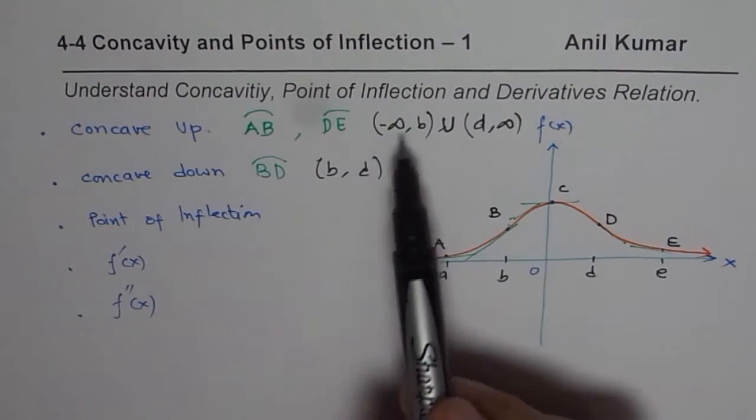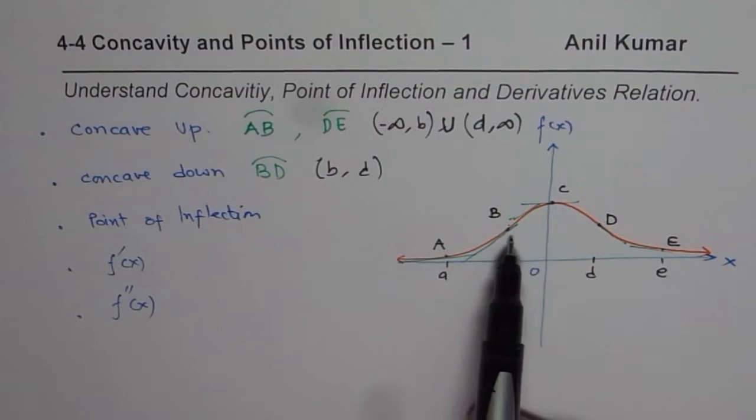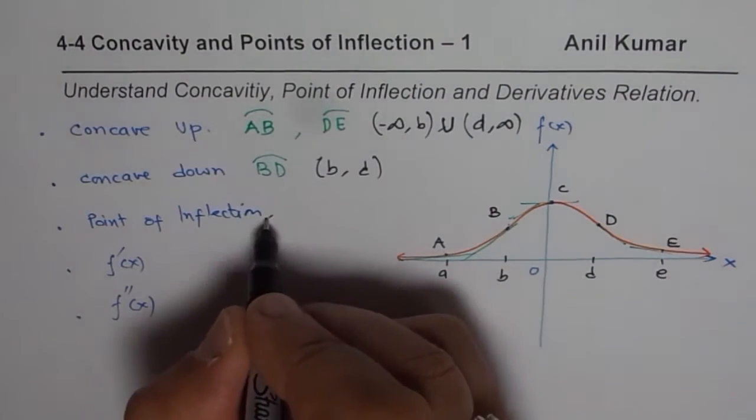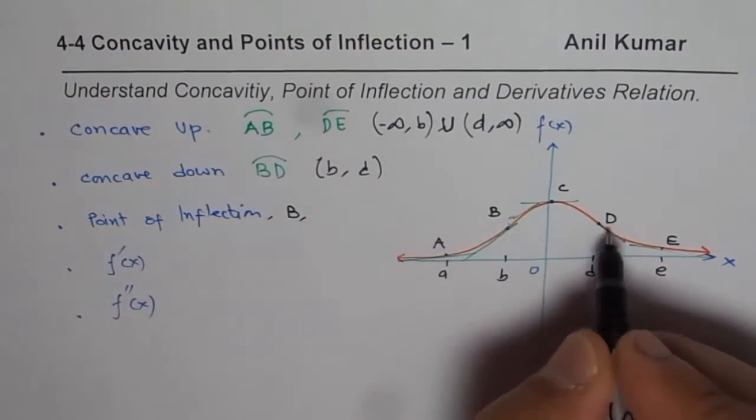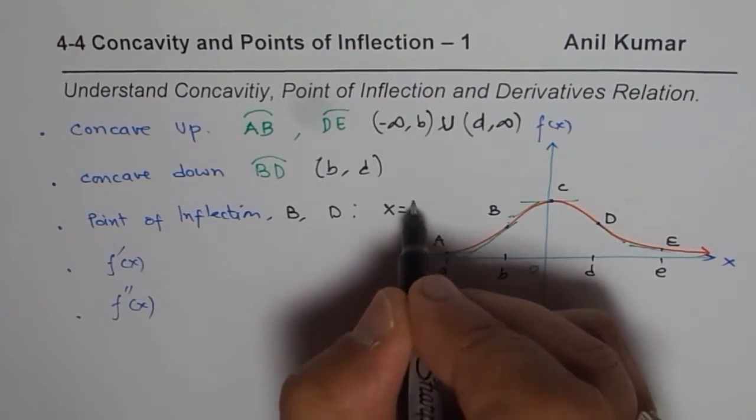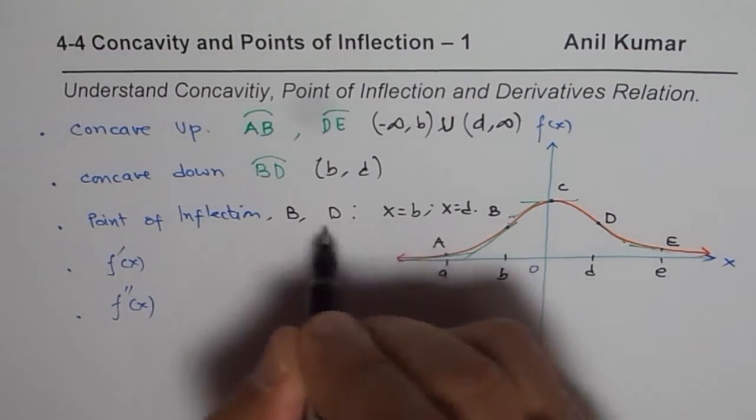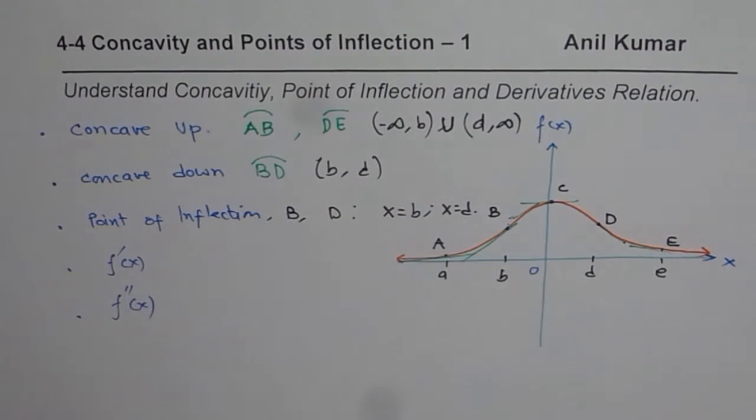Now, when the concavity changes, we get point of inflection. And so we have two points of inflections here. So one point of inflection is at b, the other one is at d, which you could also write as x equals to b, and at x equals to d. As you wish. Both are good enough.